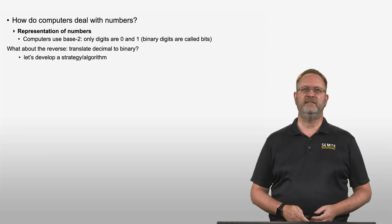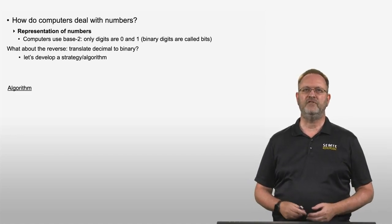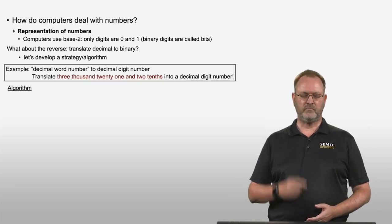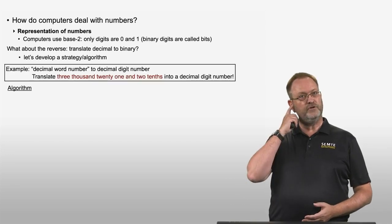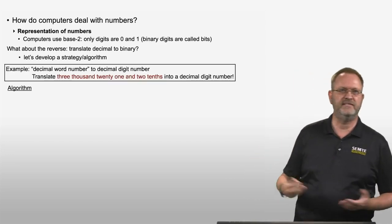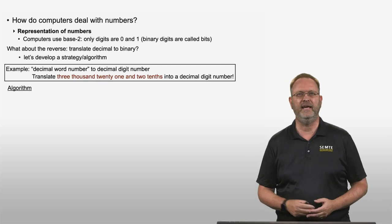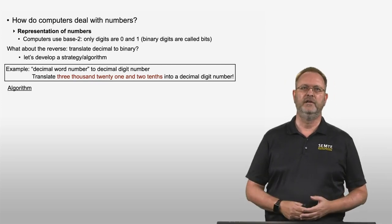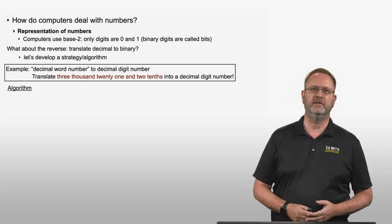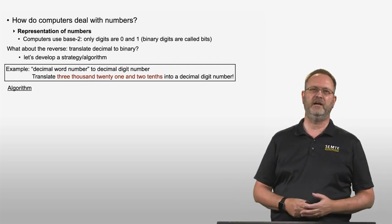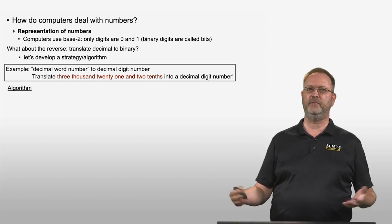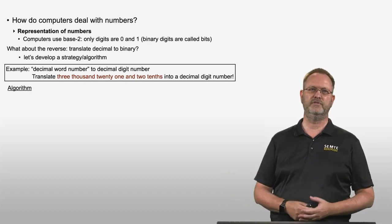In order to do this, let's develop a strategy, also called an algorithm. We're going to do this with an example of translating a decimal word number to a decimal digit number, because we're all familiar with how to do this almost automatically, having grown up using decimal numbers.